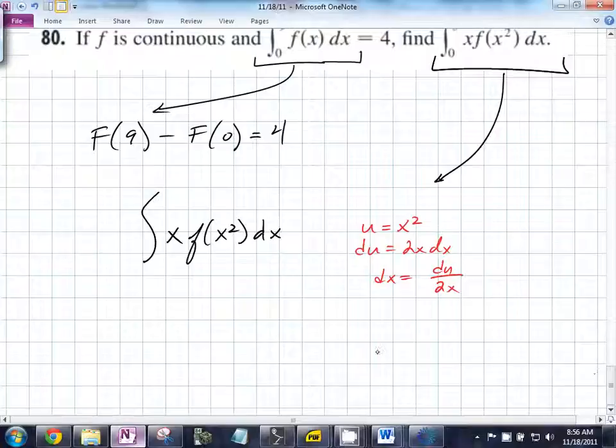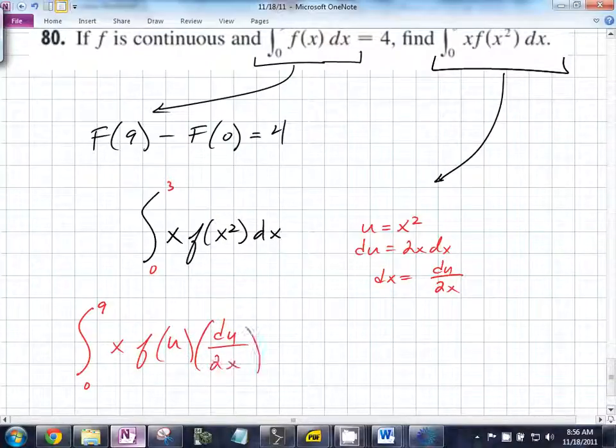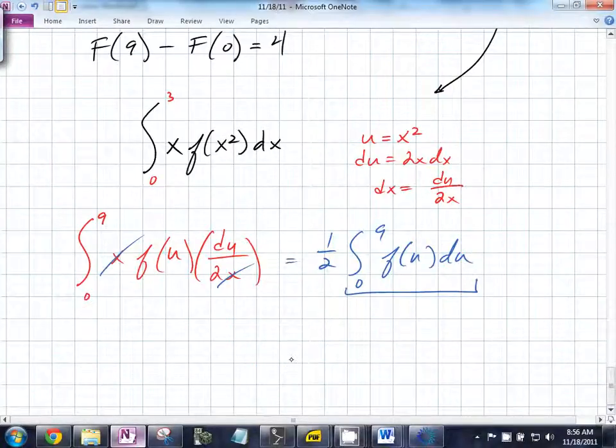We're going from zero to three. So what are our new limits of integration? Zero to nine. x times f of u times du over 2x. What cancels? Is that exactly what we're hoping for? So this is equal to one half times the integral from zero to nine of f of u du. You know what this is equal to. What's that equal? Four. That is equal to four. So what's our answer? One half times four is equal to two. We did that. We know what this is. It tells us originally what is the integral from zero to nine. Four. Does it matter what we call the variable? No. The function stays the same.